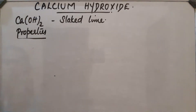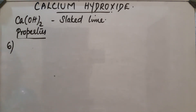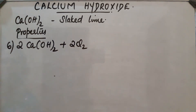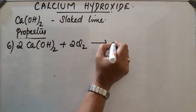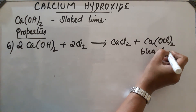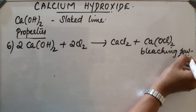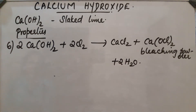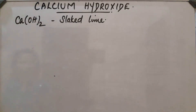An important property is that chlorine reacts with calcium hydroxide (slaked lime) to produce bleaching powder. This is the process by which bleaching powder is manufactured. Calcium hydroxide reacts with chlorine gas to yield calcium chloride, bleaching powder, and water.